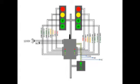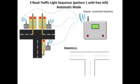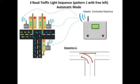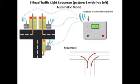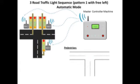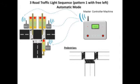The traffic lights are controlled automatically from the master unit using wireless communication. The wireless system has an advantage: it does not need any laying of cables across the road, neither does it have any future maintenance cost.